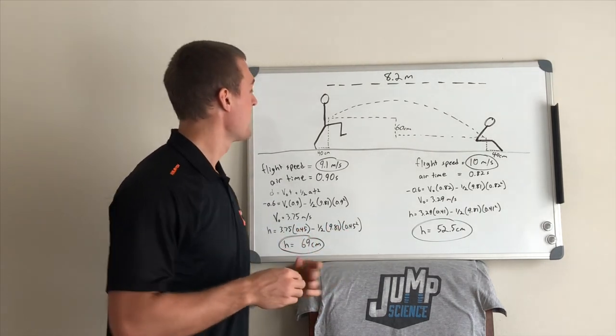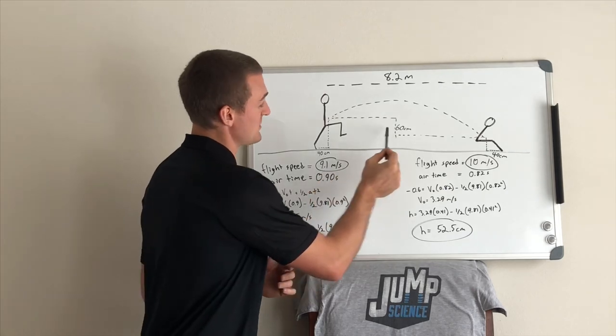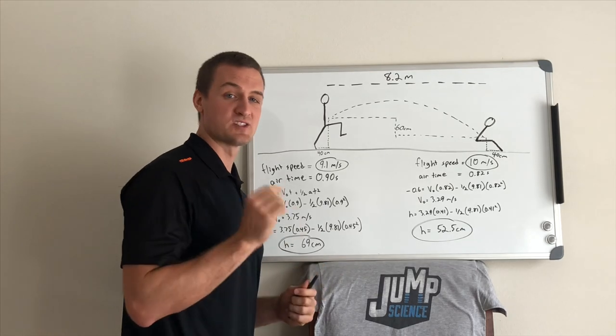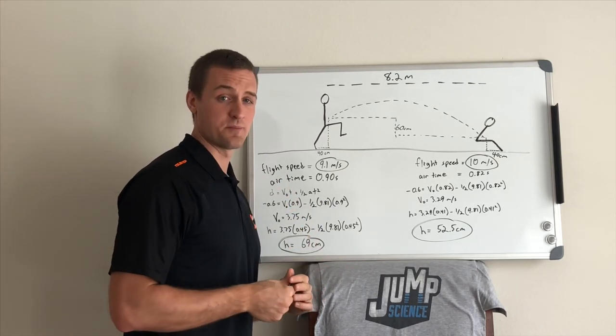Now, one more point. If we have a taller jumper, that's going to increase some of these distances that we estimated. And that's going to decrease the speed and the vertical pop requirements to get that 9-meter long jump.